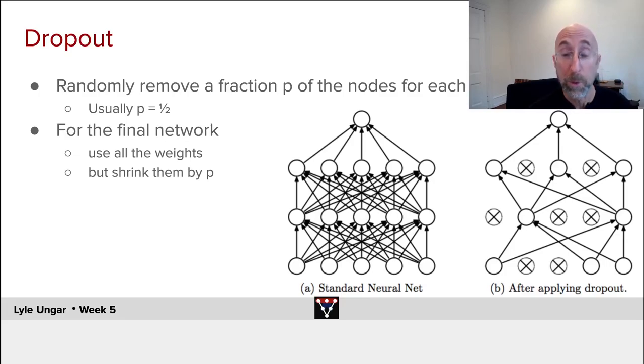We temporarily remove them, and the rest of the neural network is treated as the neural net for that mini-batch. Compute the error, the gradient, update all the weights, and then put back in all the nodes and the weights that were hidden. Repeat the process for every single mini-batch.